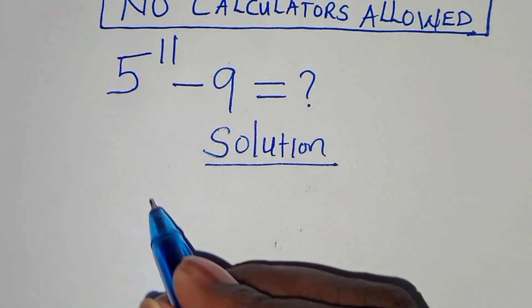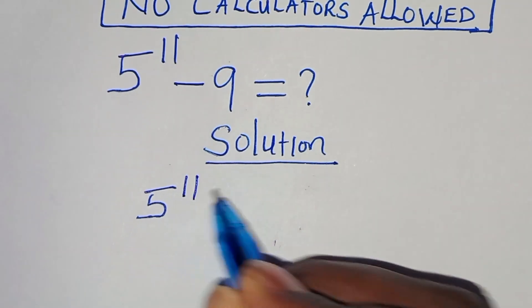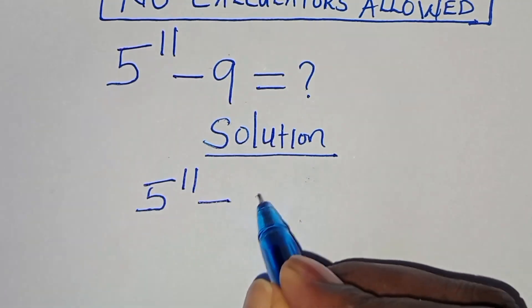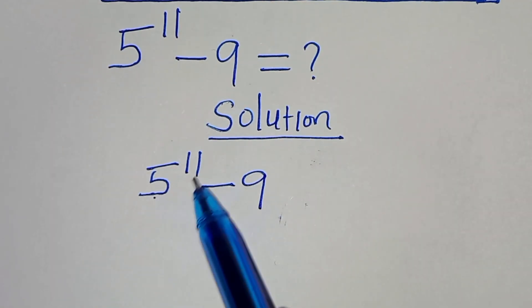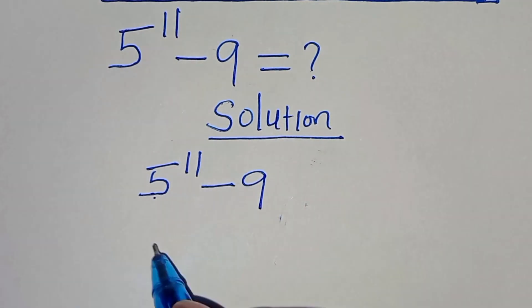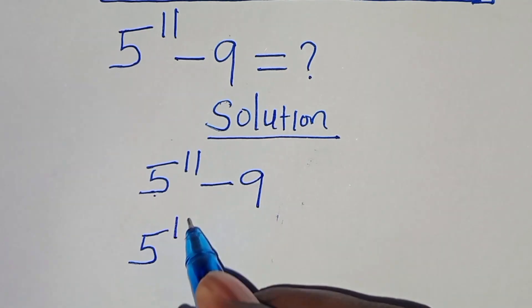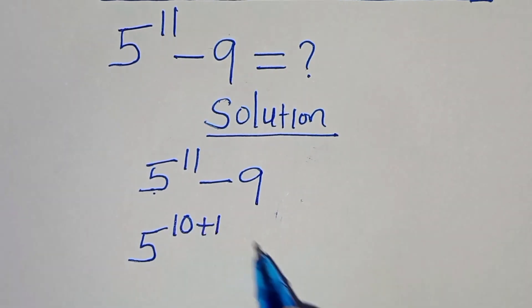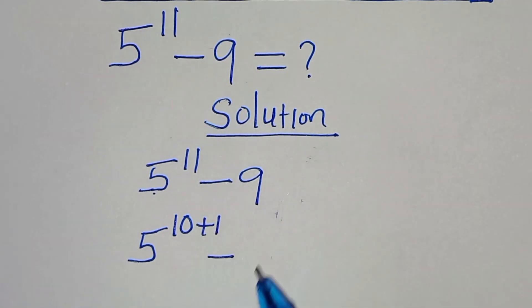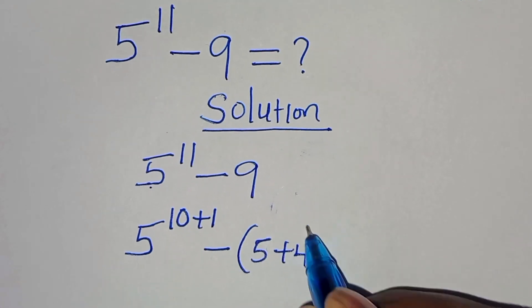We have 5 to the power of 11 minus 9. We can express 5 to the power of 11 as 5 to the power of 10 plus 1, minus 9, which gives us 5 plus 4.